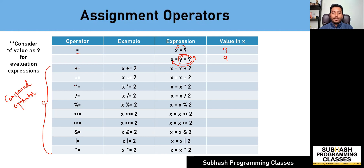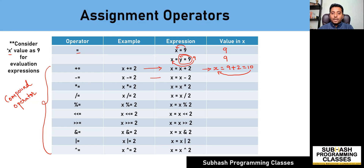As an example, if I say x plus equal-to 2, then this is considered as x is equal to x plus 2. By considering the value of x as 9, this expression becomes x is equal to 9 plus 2, and therefore the value of 11 will get stored into x. Similarly, if I say x minus equal-to 2, this is considered as x is equal to x minus 2, which gives x is equal to 9 minus 2, resulting in 7, and the value of 7 gets stored into x.